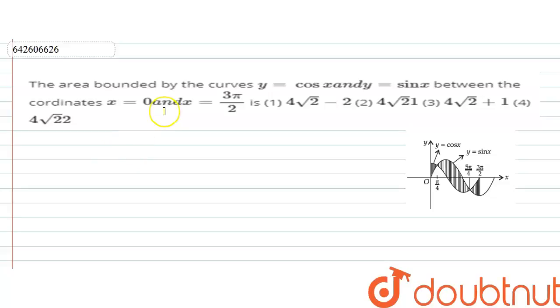The question says that area bounded by the curves y is equal to cos x and y is equal to sin x between the coordinates x is equal to 0 and x is equal to 3π/2.